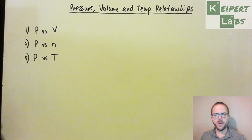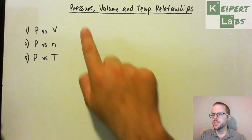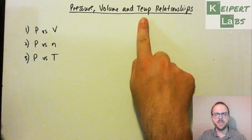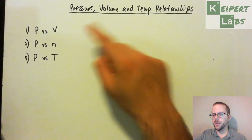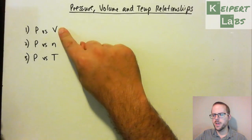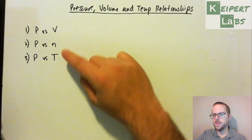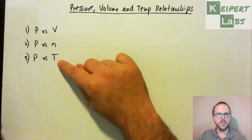Hi everyone, welcome to this episode of Kaipit Labs. In this video we're going to be talking about the relationships between pressure, volume and temperature when we're thinking about samples of gases. We're going to go through pressure versus volume first, pressure versus n which refers to the number of particles, and then pressure versus temperature for a gas.